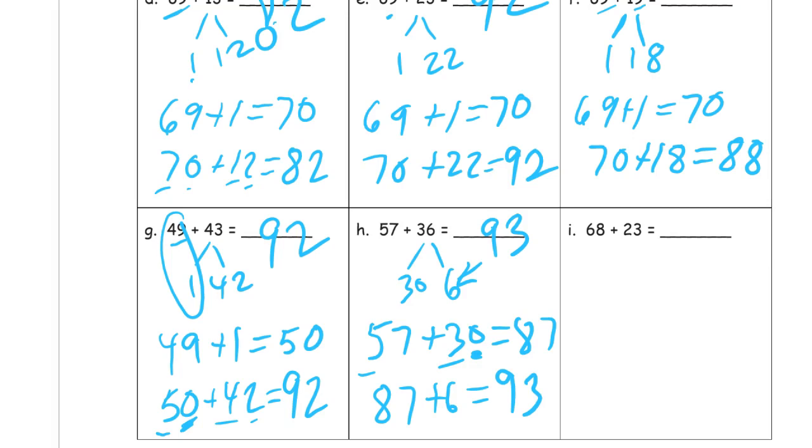And we have 68 plus 23. Here we have that 8 ones. So, what I'm looking for here is I need 2 more to get that to 70, because I want to get to the next 10. And what's going to be left from that 2 less than 23 is 21. So, 68 plus 2 equals 70. And 70 plus 21, 91.